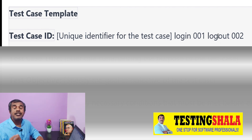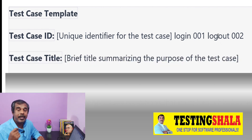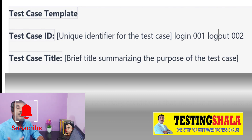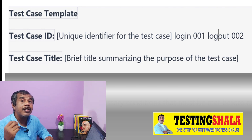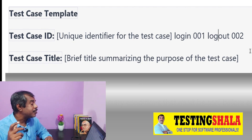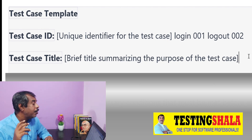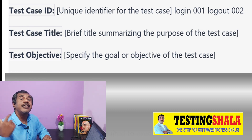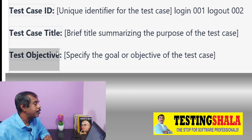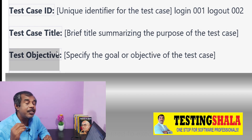The second field in the test case template is the Test Case Title. This is very important, especially as test cases grow gradually — maybe to a thousand, two thousand, ten thousand, or twenty thousand test cases. If titles are not properly written, it is very difficult to identify the right test case. Putting the right title makes searching very easy, and anyone reading it should have clarity on what the test case is all about.